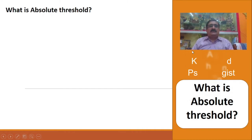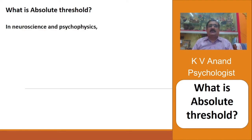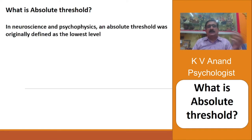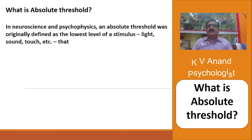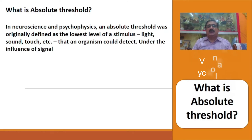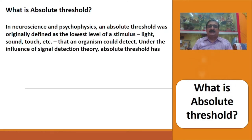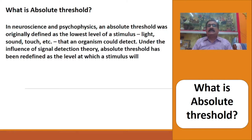Today we will see what is absolute threshold in neuroscience and psychophysics. An absolute threshold was originally defined as the lowest level of stimulus that an organism could detect.